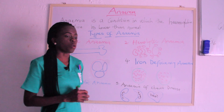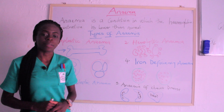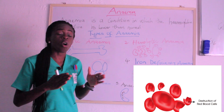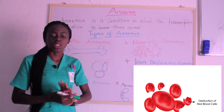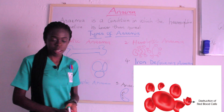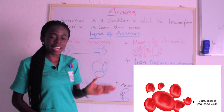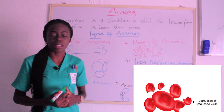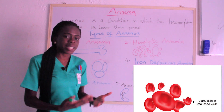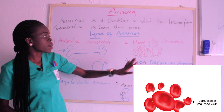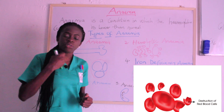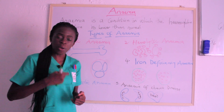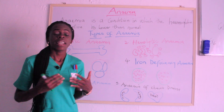The second type is hemolytic anemia. In hemolytic anemia, there is excessive destruction of red blood cells. Normally after 120 days the red blood cells are bound to die, but in hemolytic anemia there is excessive destruction of the red blood cells and the bone marrow cannot compensate for it. When there is excessive destruction of red blood cells, definitely there is going to be a reduction in the hemoglobin concentration in the body.